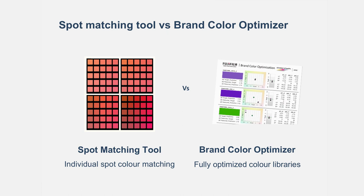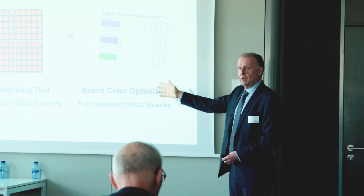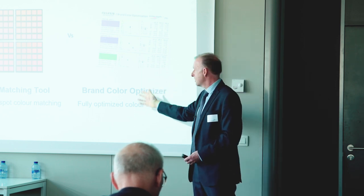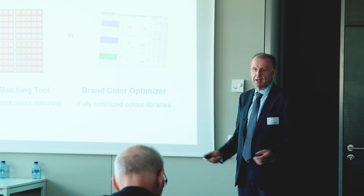Spot colours isn't new to JetPress — this has been possible prior to the 750S. But we now have two levels of spot colour matching tools, depending on what work type the customer takes on. The spot colour matching tool has been there from the beginning: you choose a specific Pantone colour, get an array of colour charts around that colour, choose which is closest to your reference, and repeat that process a few times to arrive at a very accurate match. With Brand Colour Optimiser, in the same time it takes to optimise one colour, you optimise the entire library. Really it's down to the choice of the customer and the work type — for packaging this would be a must, but for general commercial print work with occasional spot colour work, the existing tool is more than sufficient.